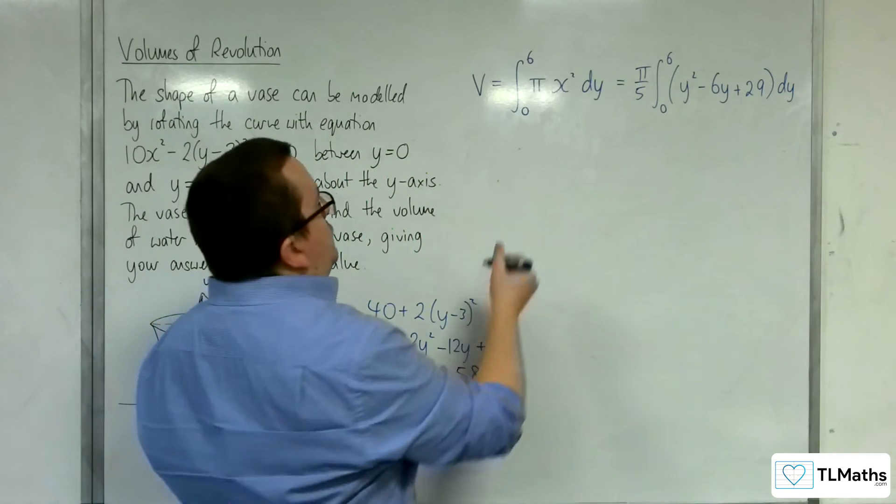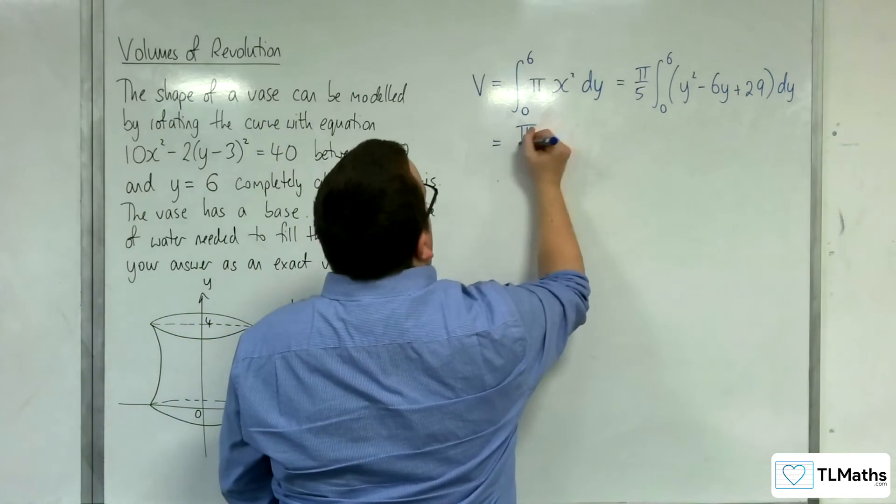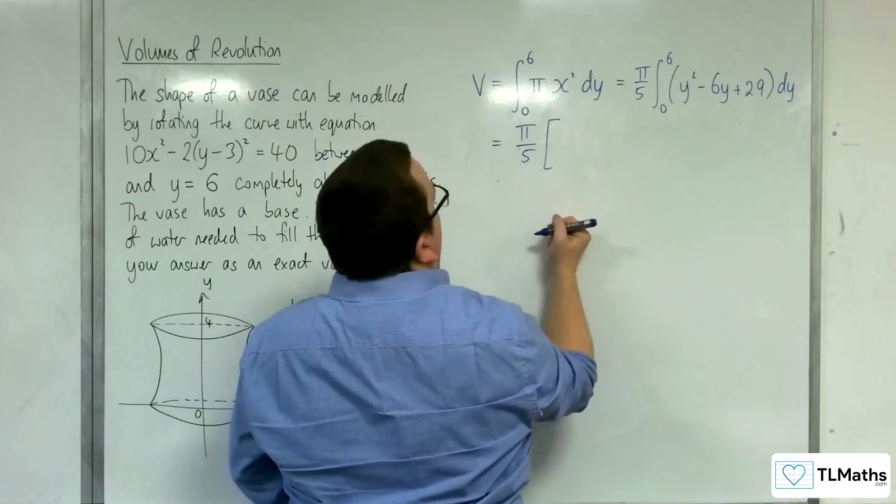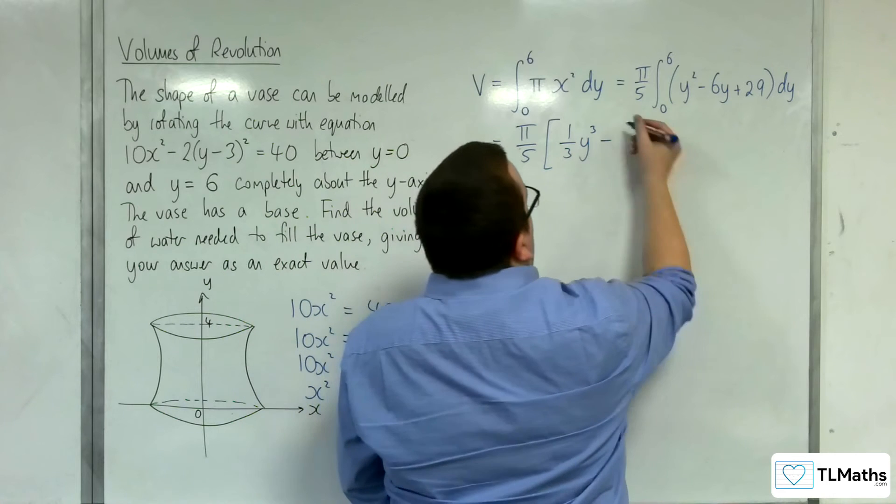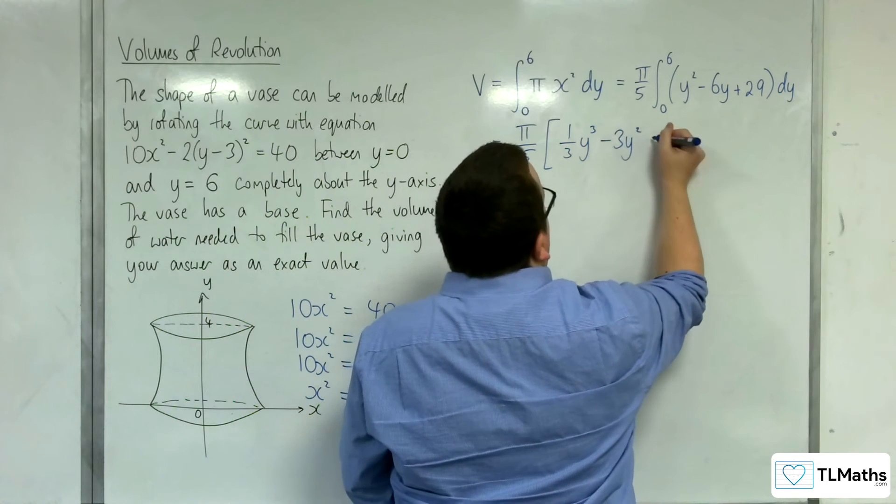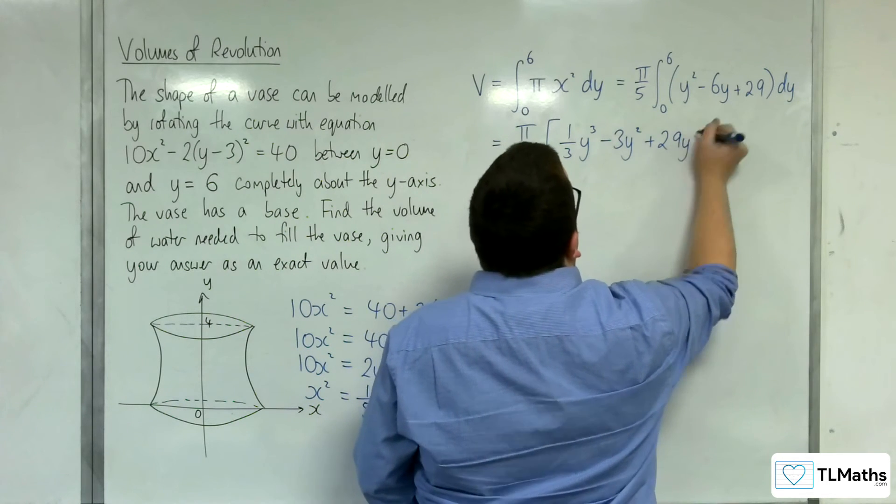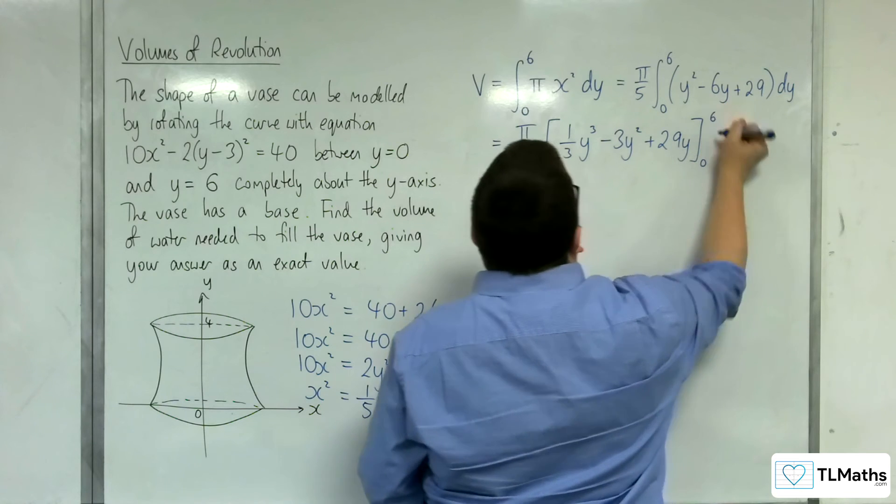So now I can integrate. So we've got π over 5. Then we've got 1/3 y³ - 3y² + 29y, evaluated between 0 and 6.